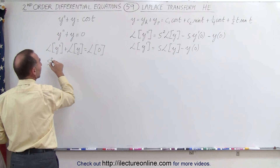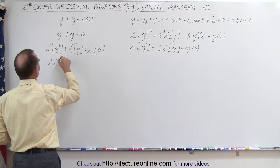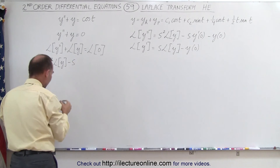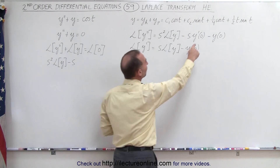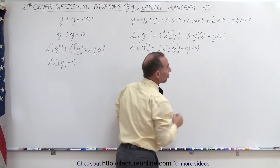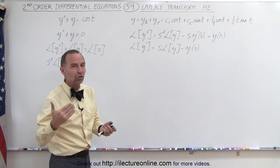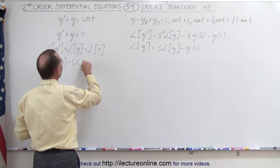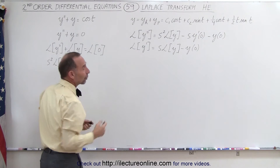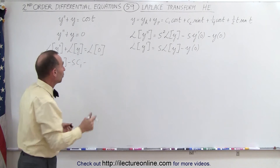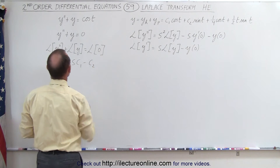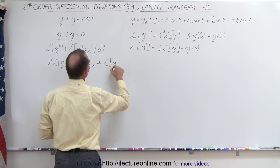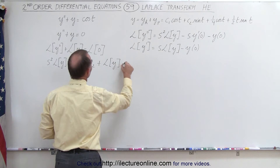So here we substitute what we have: s squared times the Laplace transform of y, minus s times y prime evaluated at zero — since we don't know that value we'll call it c1 — minus y evaluated at zero, which we'll call c2. We add to that the Laplace transform of y and set it equal to zero. Remember, we're only solving for the homogeneous part of the solution.